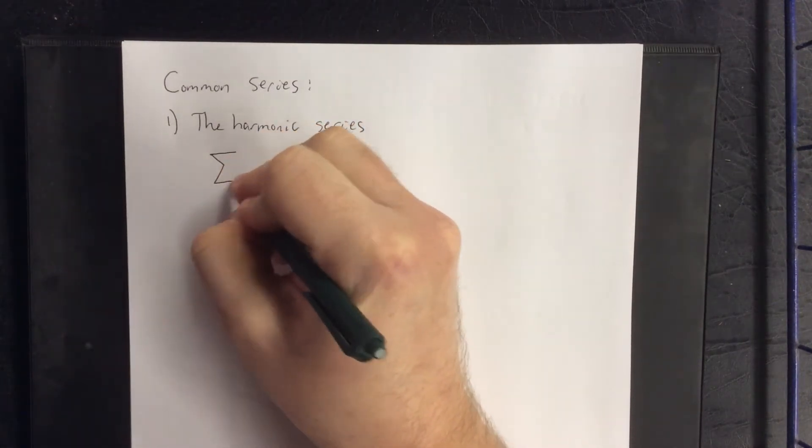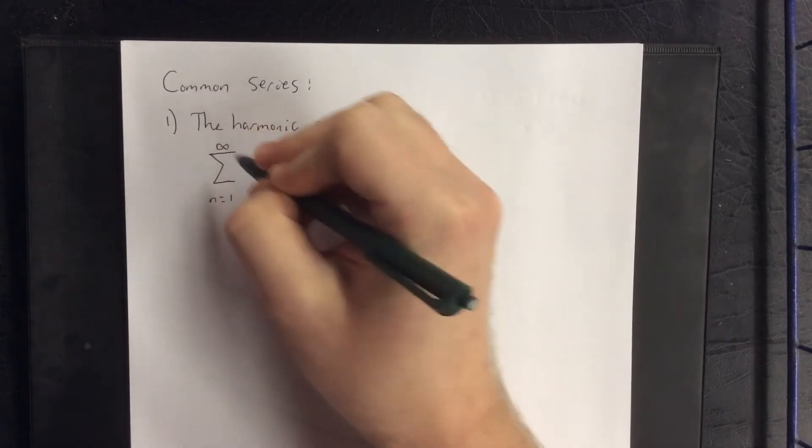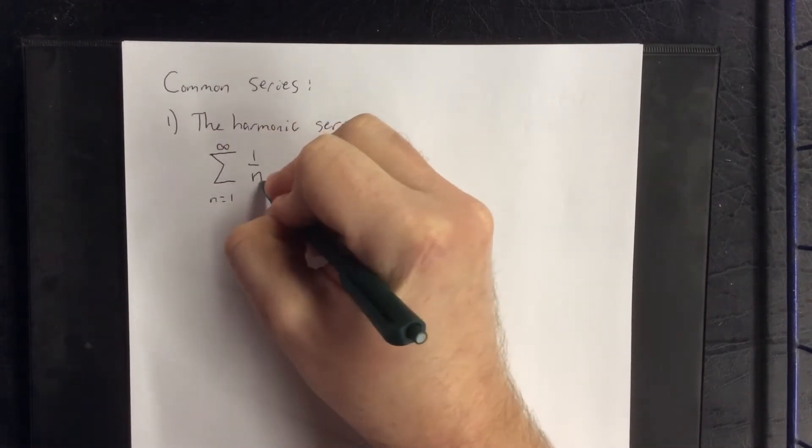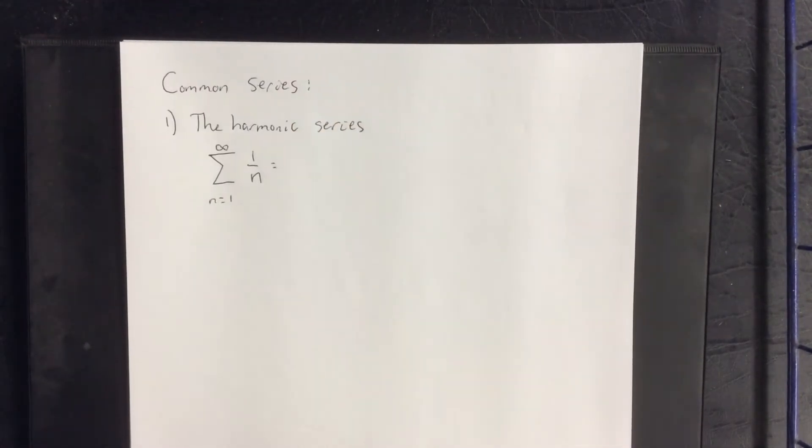For certain instruments, harmonics can come out of playing certain frequencies of the instrument, and all of those frequencies are going to be based off of reciprocals of positive integers.